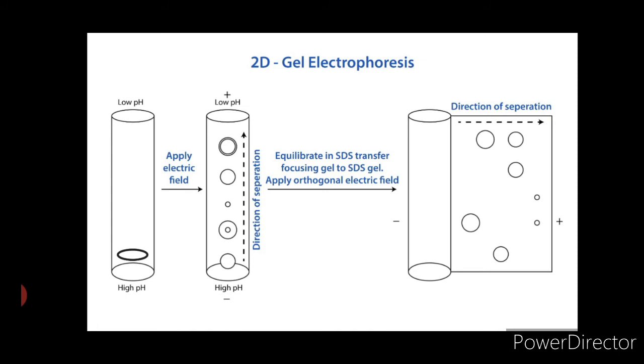Now let us understand the second dimension. The second dimension separation in 2D electrophoresis is generally carried out by standard SDS-PAGE, which is also called sodium dodecyl sulfate polyacrylamide gel electrophoresis, and separates the protein according to molecular mass irrespective of charge.